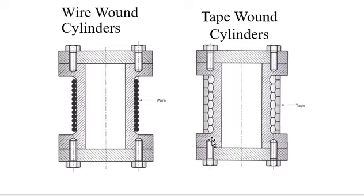The layers are offset from the preceding layer to get proper interlock, and this also increases the axial strength. During winding, the tape is heated so that on cooling it contracts and induces initial compressive stress in the cylinder wall. The tape wound and wire wound methods are both relatively simple methods of pre-stressing.